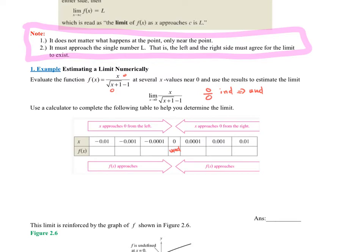Now I want to approach the number zero, and they actually gave us the x values we want. We're going to plug these into the function x over the square root of x plus one minus one. We'll start with negative 0.01, which is to the left of zero, then negative 0.001, then negative 0.0001 — getting closer and closer to zero from the left. After that, we'll plug in 0.01, then 0.001, then 0.0001 — getting closer and closer to zero from the right. The question is: what is happening to our y values?